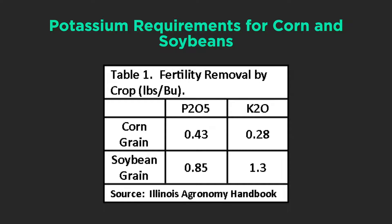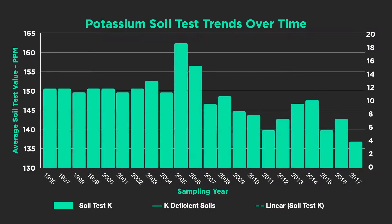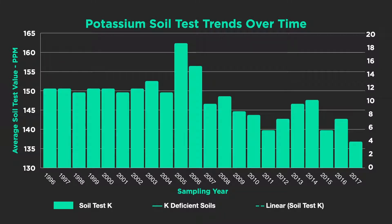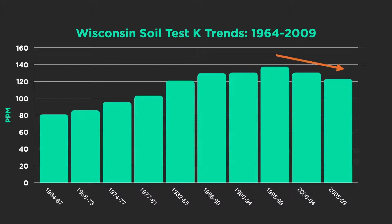From the Illinois Agronomy Handbook, corn uses 0.28 pounds of potassium per bushel and soybeans use 1.3 pounds — soybeans are definitely a higher user. Soil testing labs, including A&L Great Lakes data, show that after 2006 soil potassium levels have been dropping. The University of Wisconsin at Madison sees the same response starting in the late 90s: soil samples just don't have enough potassium. This is a significant concern.